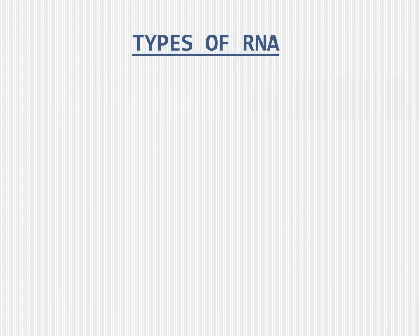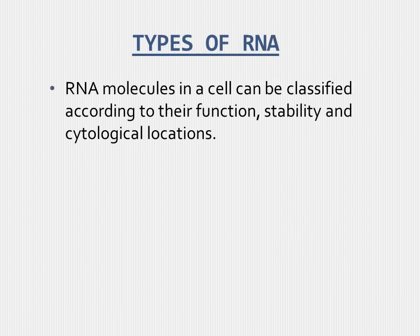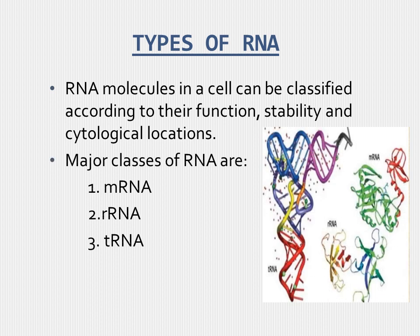Types of RNA. RNA molecules in a cell can be classified according to their function, stability, and cytological locations. The major classes of RNA are mRNA, rRNA, and tRNA — messenger RNA, ribosomal RNA, and transfer RNA respectively.